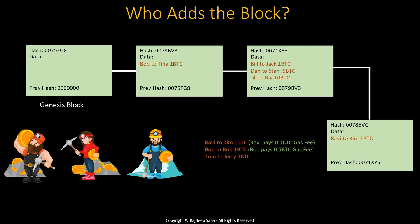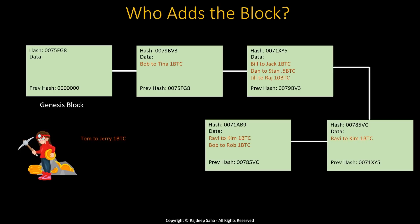Coming back to three transactions: the first two senders — Ravi and Bob — are willing to pay a gas fee: 0.1 BTC for the first transaction, and Bob is paying 0.5 BTC for the second. The third transaction, Tom to Jerry, Tom does not want to pay any gas fee. Chances are, since Tom is paying no gas fee, this transaction will never be added to the block. In this case, another miner wins and the transactions for Ravi to Kim and Bob to Rob get added to the next block. However, Tom to Jerry did not get picked up.